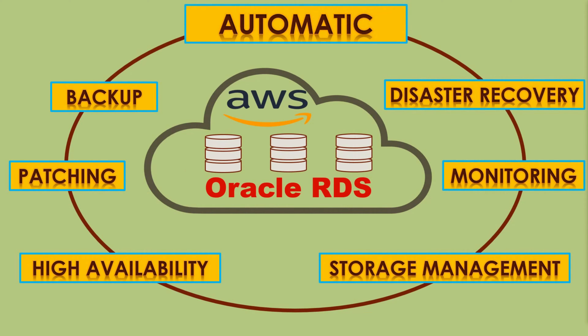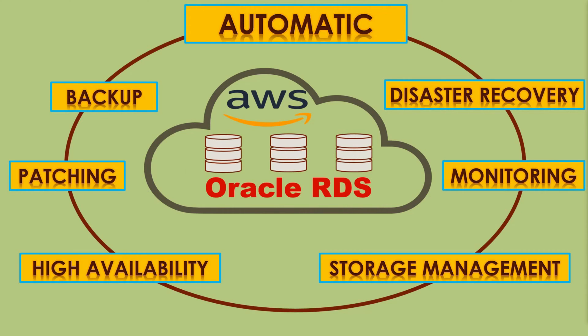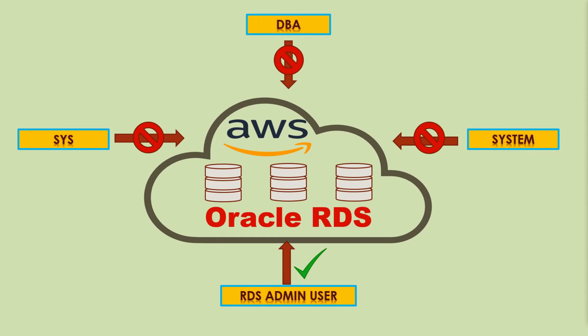Oracle RDS is a semi-automatic database where many administrative activities such as backups, patching, and high availability are already fully or partially automated. We don't have direct access to the database host or file systems, and we cannot use the sys or system account for normal DBA activities. However, RDS provides an admin or master user, which can be termed the super user of the RDS instance.